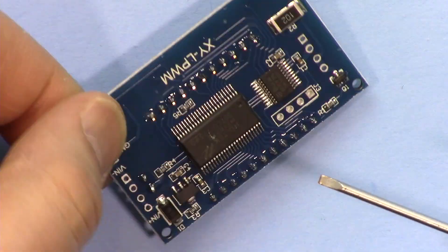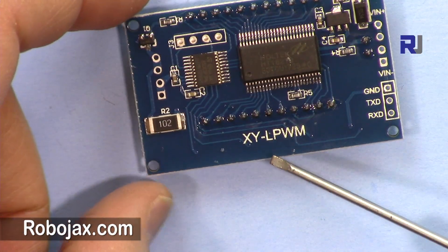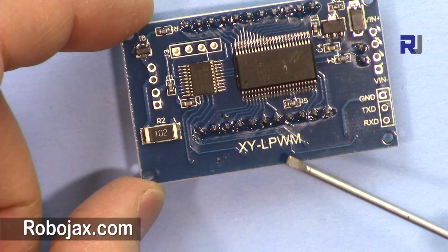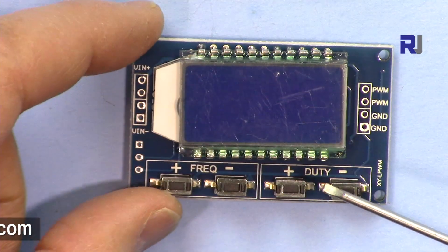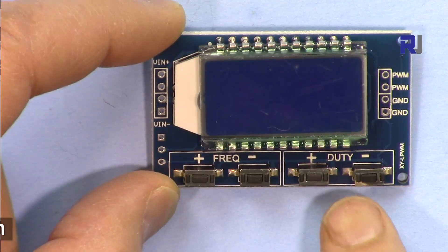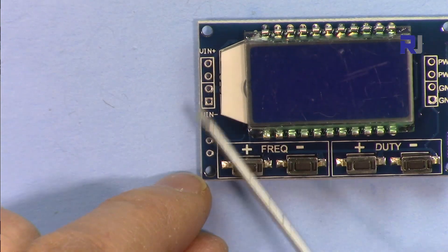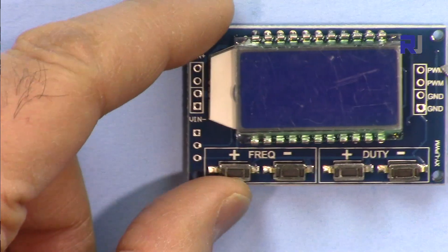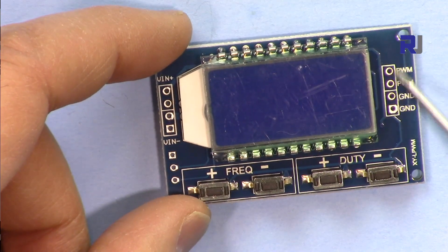So let's get started. It has four buttons - two for the duty cycle, two for the frequency - and a 5 volt input. They have four connectors, maybe to connect multiple devices for ground and pulse width modulation.